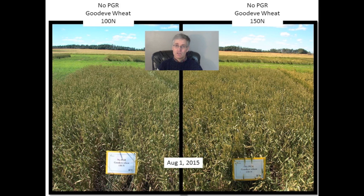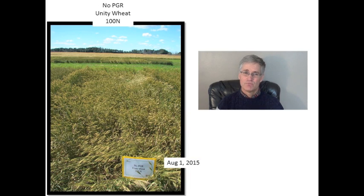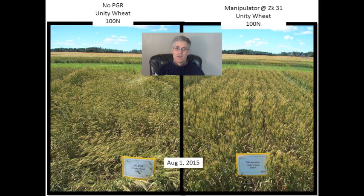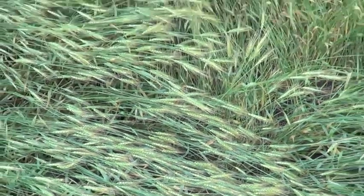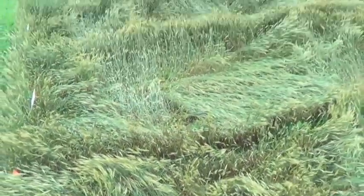Good Eve was very good at resisting lodging whether it was at 100 or 150 pounds of actual nitrogen. In contrast, even at the 100 pounds per acre rate of nitrogen, the variety Unity was starting to fall down. However, applying Manipulator greatly improved the lodging resistance of Unity — it's really striking, particularly when you look at the plots from above. In the video you can see Unity lying down without the application of Manipulator, while the next block up is also Unity but still standing quite well as a result of applying Manipulator.